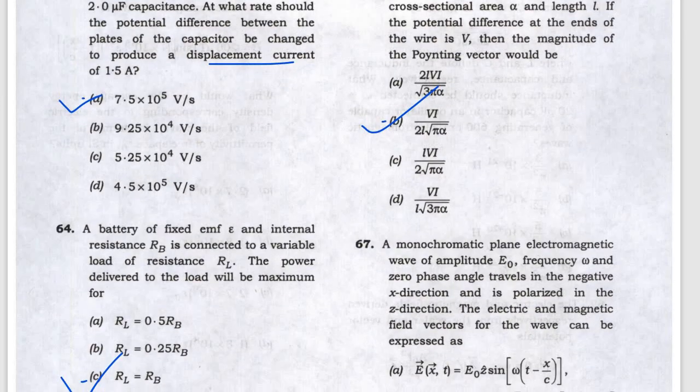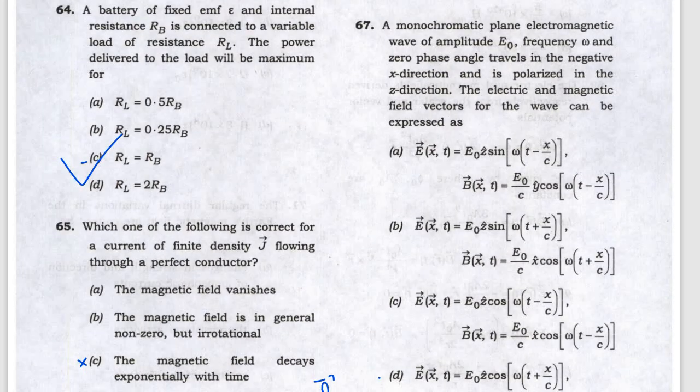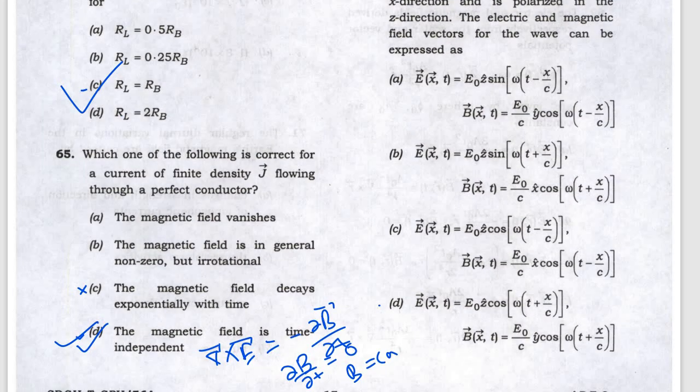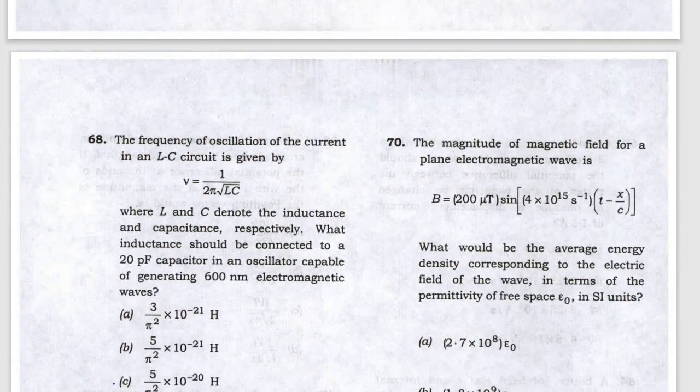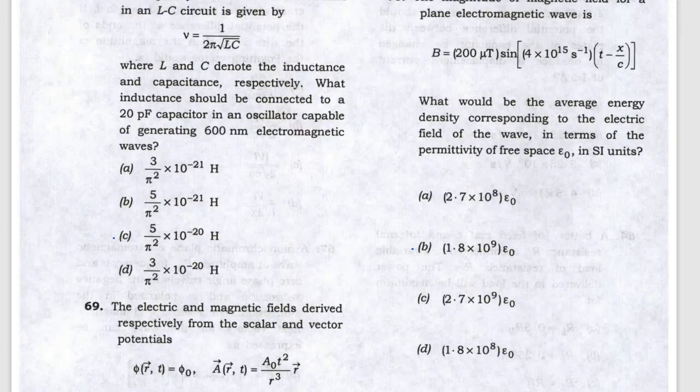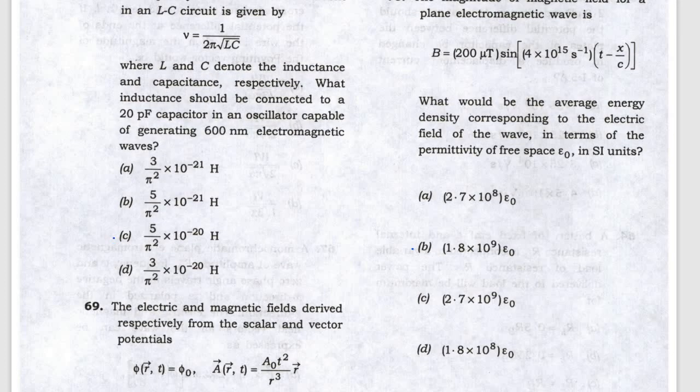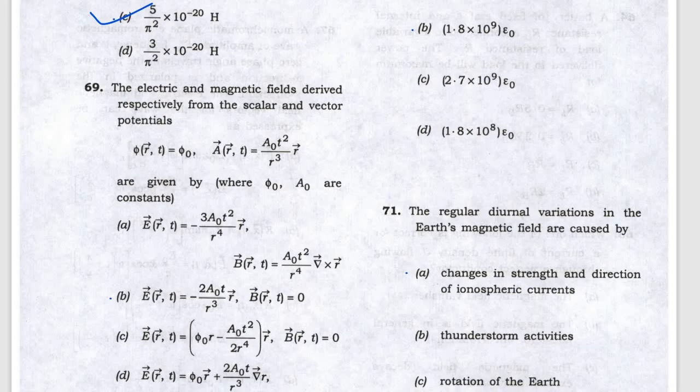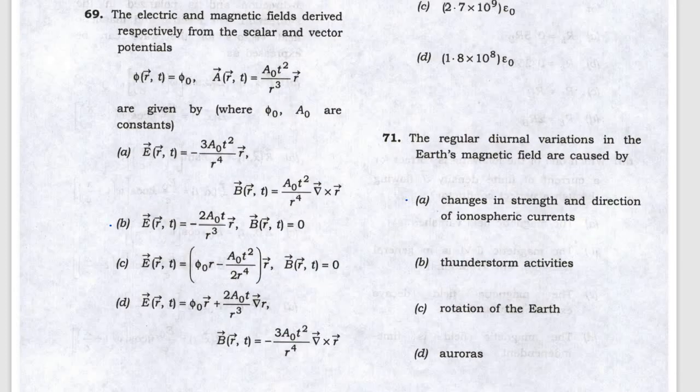Question 66 answer is B, and 67 answer is D. For the LC circuit, the inductance answer is C. For phi and A problems, B equals C, and E equals minus grad phi, so the answer is B.